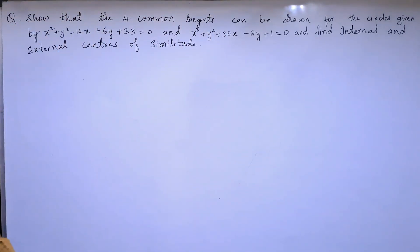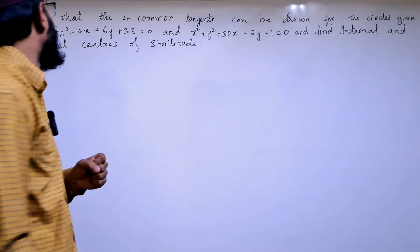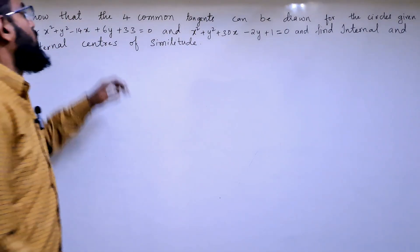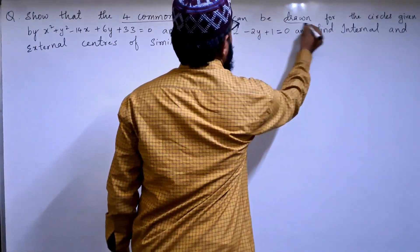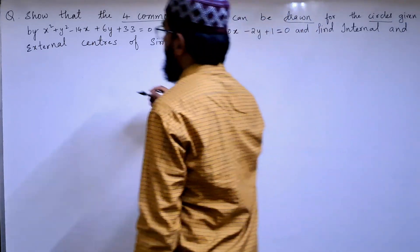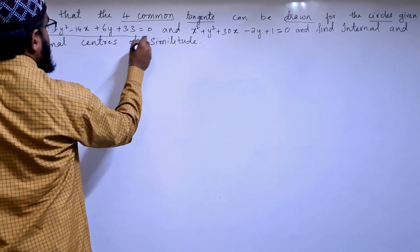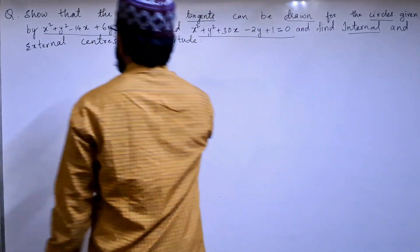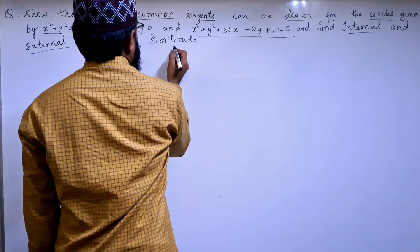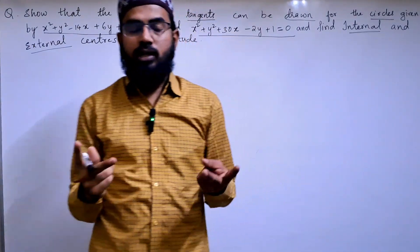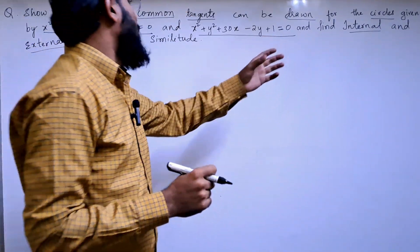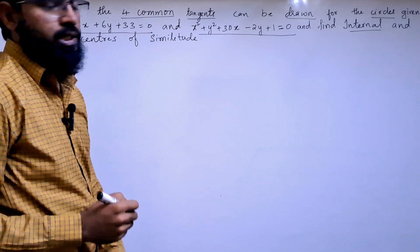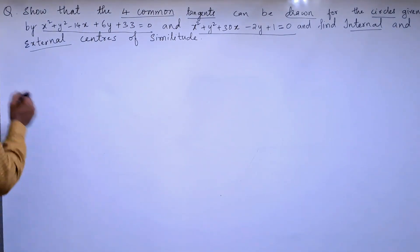Hello students, today we are going to solve an important problem from circles. The question is: show that four common tangents can be drawn for the given circles. We need to find out the internal and external centers of similitude and also show that four common tangents can be drawn.